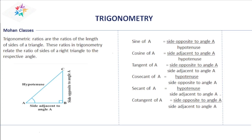What is a trigonometric ratio? Trigonometric ratios are the ratios of the length of sides of a triangle. These ratios in trigonometry relate the ratio of sides of the right triangle to the respective angle.